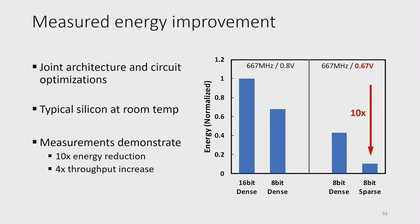Here's a breakdown of how different architectural techniques improve energy. Starting from a normalized baseline of one: switching from 16-bit to 8-bit data reduces power consumption. Using timing error detection allows us to reduce supply voltage and remove worst-case voltage guard band. Finally, exploiting sparsity in the data lets us skip a huge number of operations. Altogether, these measurements demonstrate a 10x reduction in energy and a simultaneous 4x increase in throughput.